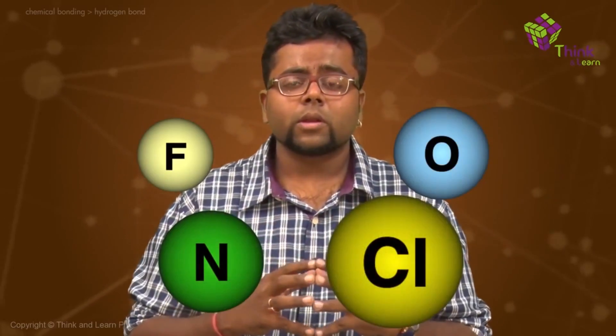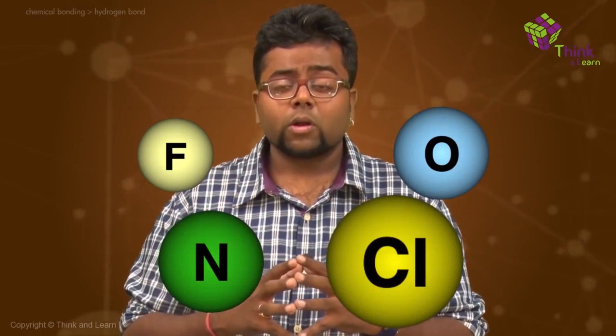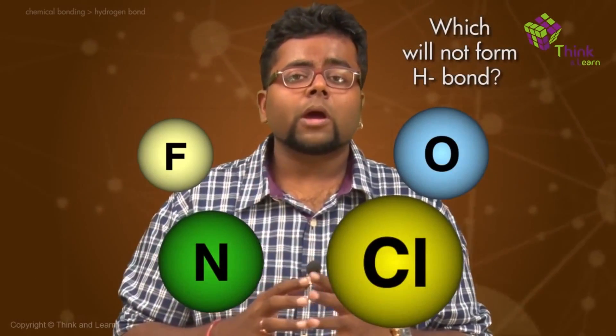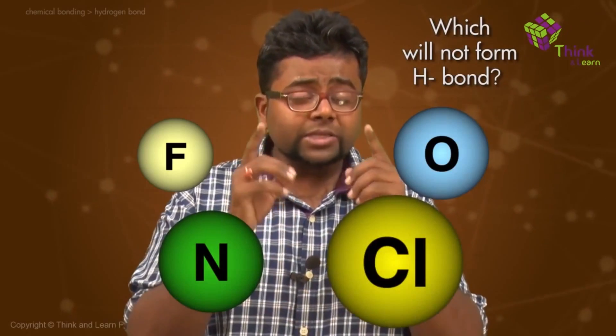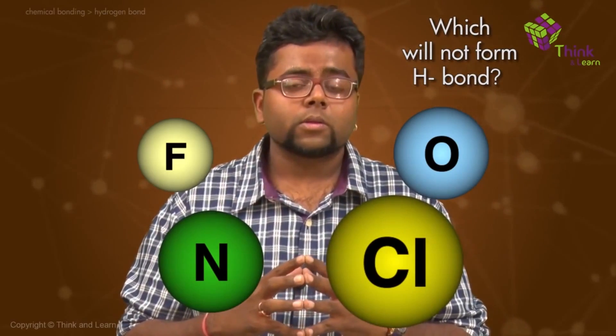Let me ask you a question. If I have four elements or four atoms in front of me — fluorine, oxygen, nitrogen, and chlorine — out of the four, which one do you think will not form a hydrogen bond? And please think why will it not form a bond?